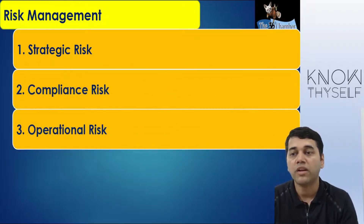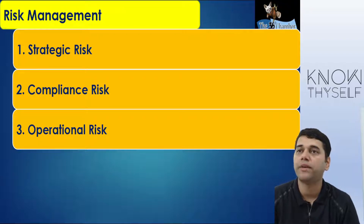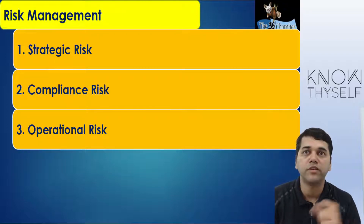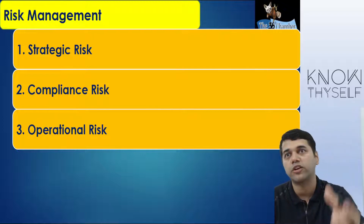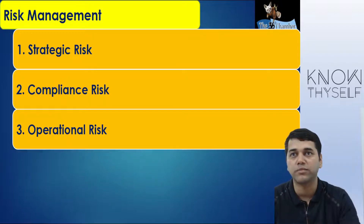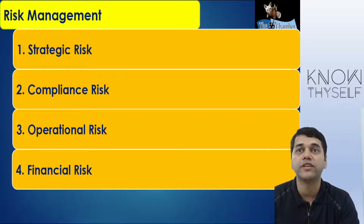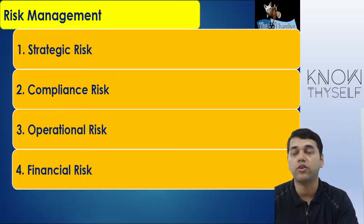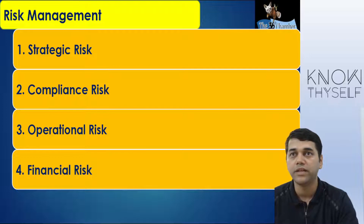You have got a compliance risk — you didn't comply with the GST laws. You have got some operational risk: raw material finished, liquidity is not there, cash flow, cash is not there, you are using short-term funds into long-term things. And you have got a financial risk — debt equity ratios have increased, you are not able to service, you have not maintained some liquidity.